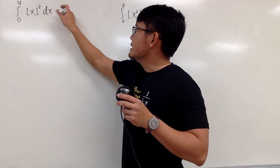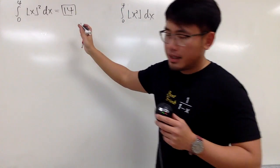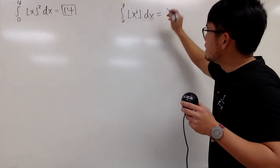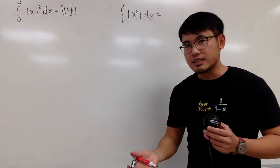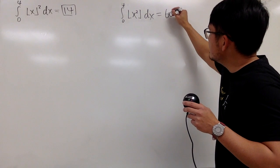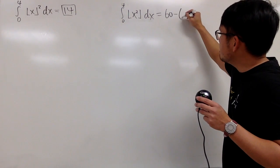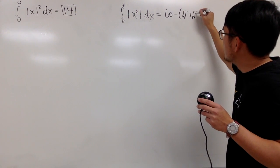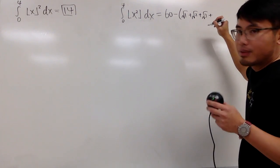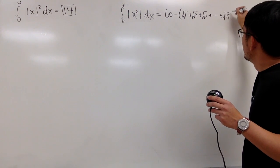The first one is equal to 14. And then the second one, this right here is slightly more complicated, but I will write down the exact answer for you guys first. This is equal to 60, and then we minus the sum of square root of 1, square root of 2, square root of 3, and then up to square root of 15.